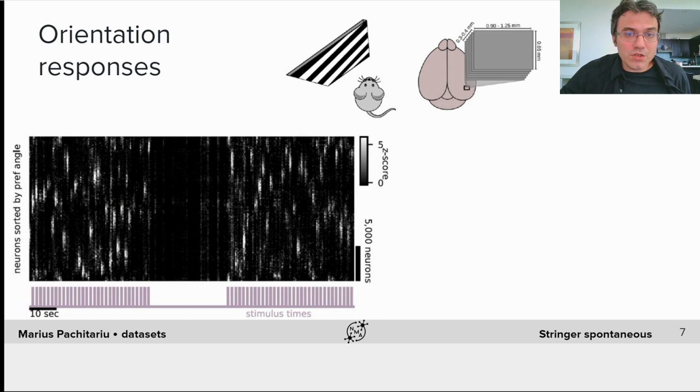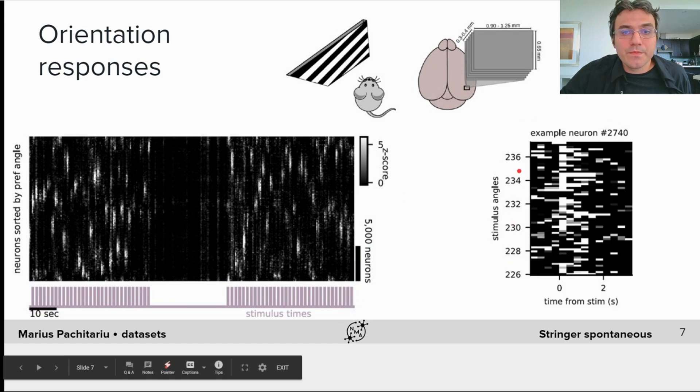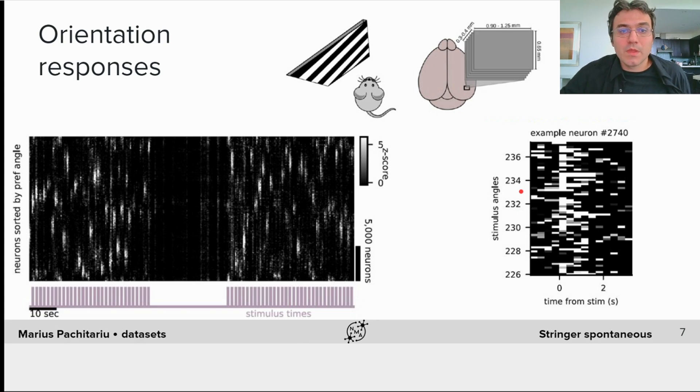There are a lot of stimuli shown, about 5,000, spanning the range from 0 to 360 degrees, and sampled randomly. If we zoom in on a narrow range of stimuli, we can see some typical responses from a neuron. Even though overall, this neuron prefers this particular stimulus value, you can see it fails to activate on many trials. This is a very general neuroscience phenomenon that people refer to as trial-to-trial variability.